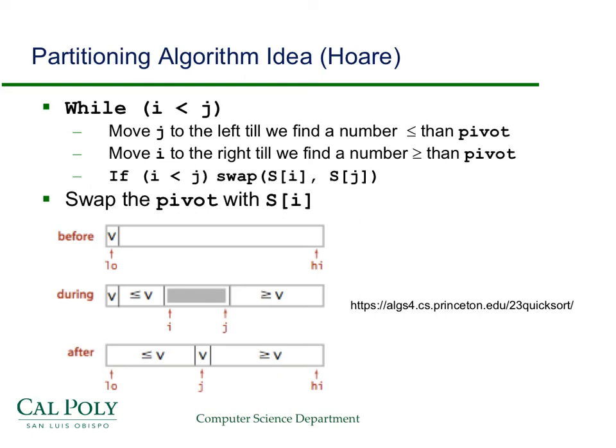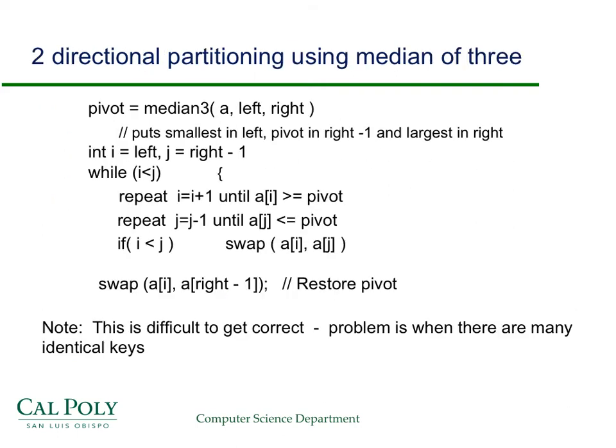And then we move the partitioning element in. This picture comes from Princeton. And on the next slide I'll show you some code also from Princeton. And you can look at that in a little more detail to check what's going on. But the idea is, again, it's pretty straightforward. Now we have two indices. We move them until we find elements that need to be moved. And then we swap those elements.